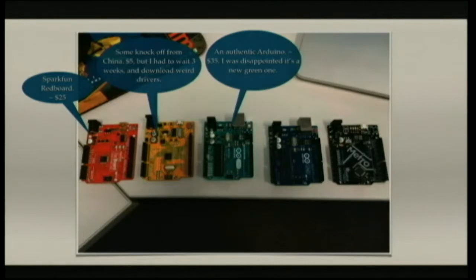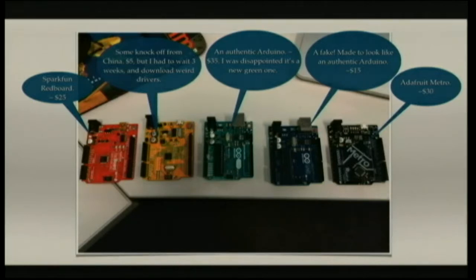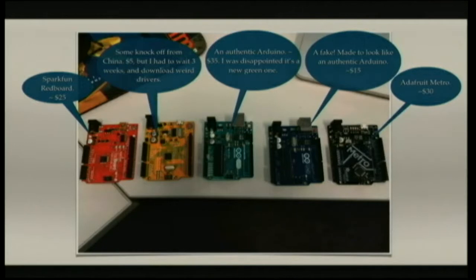That's the official authentic Arduino at about $35 - I'm disappointed because it's a new green one, I wanted the blue one. I bought a fake blue one for around $15, made to look like an authentic Arduino. And that's the Adafruit Metro board, about $30. There's a wide range of buy-in. Why would anybody pay $35 for the official if you can get the Chinese one for $5? Well, the cheap one is great for a classroom. But the $35 one actually sponsors the Arduino Foundation, putting money back into the people developing new stuff - which I think is pretty cool. I bought the Adafruit one because it looked cool, and that's who I am.